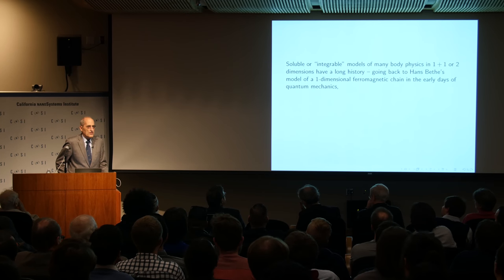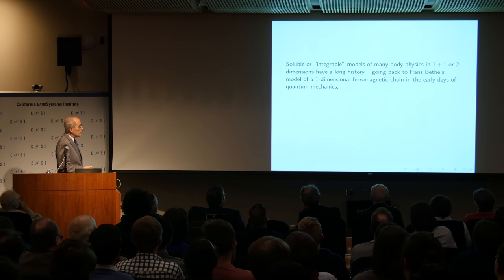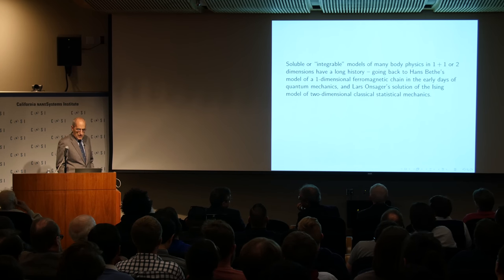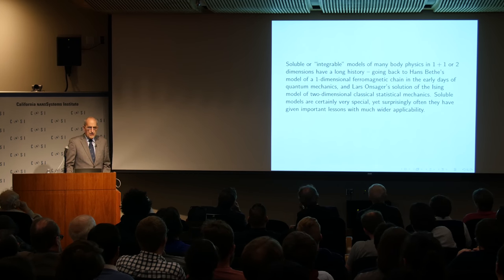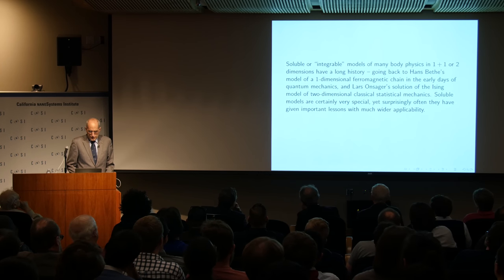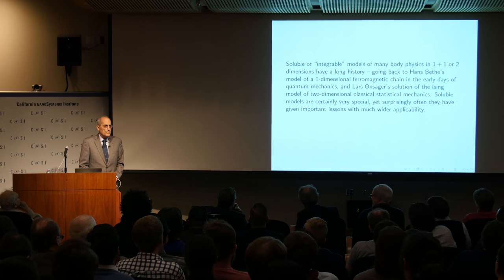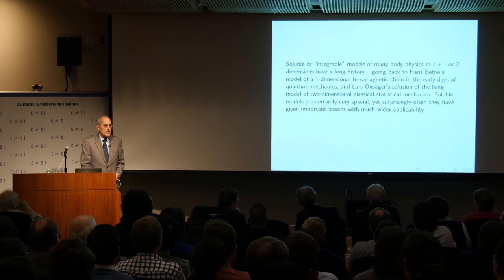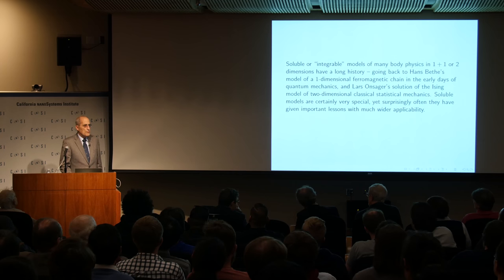But there's a surprisingly rich story of soluble or integrable models of many-body physics in one-plus-one or two dimensions. One-plus-one means one space dimension and also time — for example, a quantum chain of interacting particles. Two dimensions here usually means classical statistical mechanics in two dimensions. The prototypes are Hans Bethe's ferromagnetic chain in one-plus-one dimensions in the early days of quantum mechanics, and Onsager's solution of the Ising model of two-dimensional classical statistical mechanics.